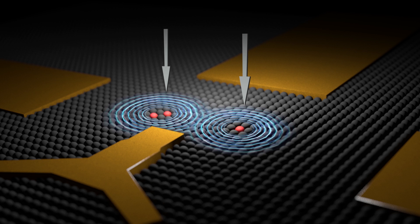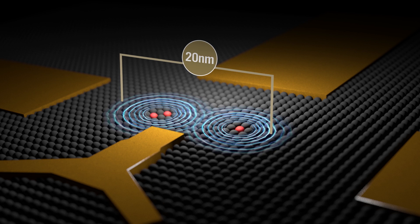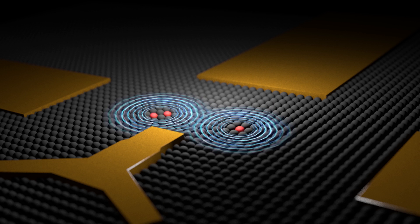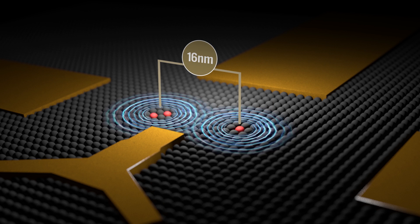According to theory, the two qubits need to be separated by at most 20 nanometers to see this correlation effect. But we've found that it only occurs at 16 nanometers apart. In our quantum world, that's a huge difference.